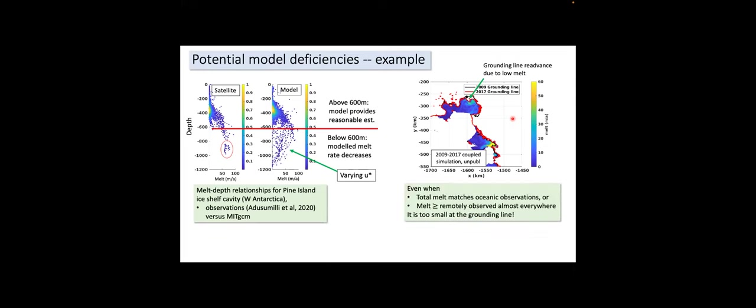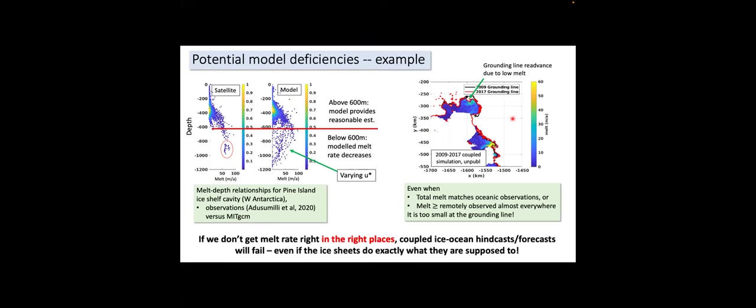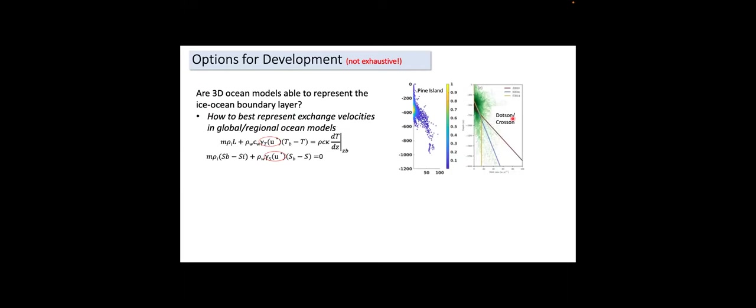The key implication is: if we don't get melt rates right in the right places, coupled ice-ocean hindcasts and forecasts will fail, even if the ice sheets do exactly what they're supposed to do. The final topic is potential directions for development, and I'll stick with a theme of what's going on near the grounding line.